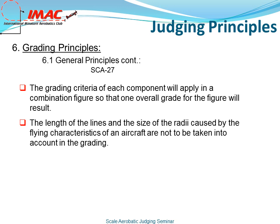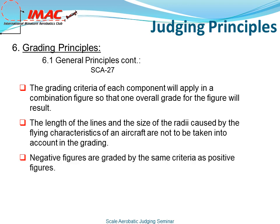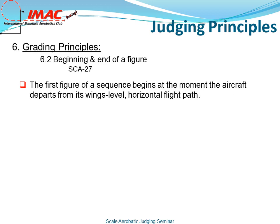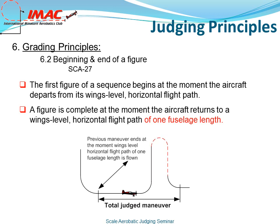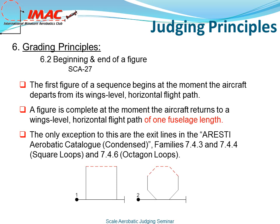The length of the lines and the size of the radii caused by the flying characteristics of the aircraft are not to be taken into account in the grading. Negative figures are graded by the same criteria as positive figures. Speed of the aircraft is not a criterion. The first figure of a sequence begins at the moment the aircraft departs from its wings-level horizontal flight path, and is complete at the moment the aircraft returns to a wings-level horizontal flight path of one fuselage length. The only exception are the exit lines of the Aresti aerobatic catalog, family 7.4 and 7.6 — square loops and octagon loops.